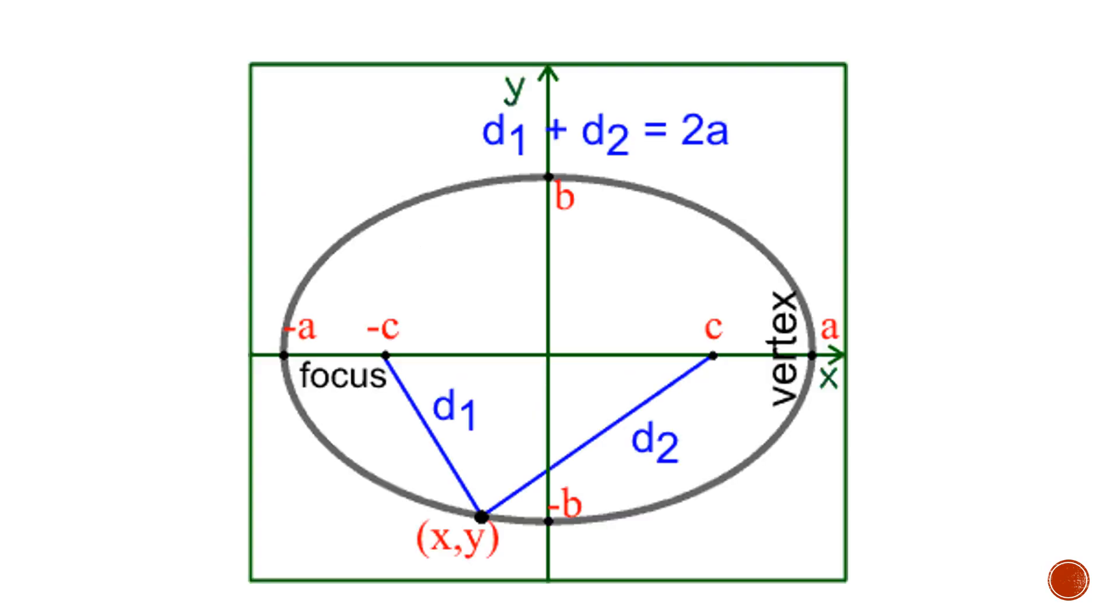We can also define ellipses as the set of all points in the plane such that the sum of the distances from two fixed points, which are called the foci, is constant. In the given case, the foci are at minus c and c, and the distances are d1 and d2. Their sum is always constant as you move through the ellipse.